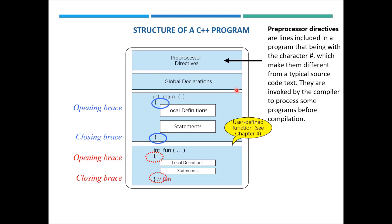We have the global declarations section where we can declare different types of variables required for our code. Then we have two sections: the main function, which is important for all programs, and user-defined functions. User-defined functions have a name like 'fun', and whatever comes inside the curly brackets are the local definitions and executable statements relevant to that function.